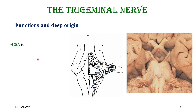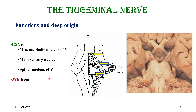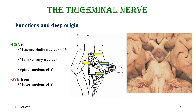The functions include general somatic afferent fibers, which go to the mesencephalic nucleus of the trigeminal in the midbrain, the main sensory nucleus in the pons, and the spinal nucleus of the trigeminal. The second function involves the fourth nucleus — special visceral efferent fibers to the muscles arising from the first pharyngeal arch.